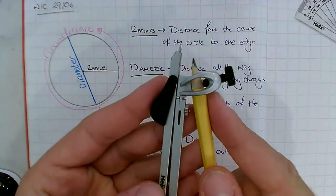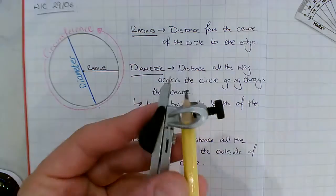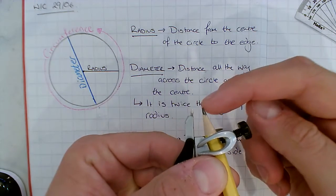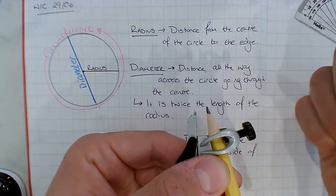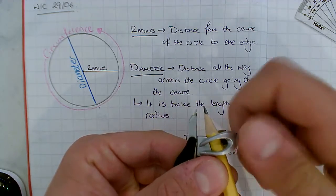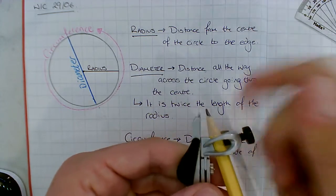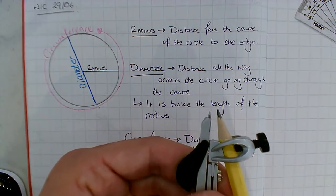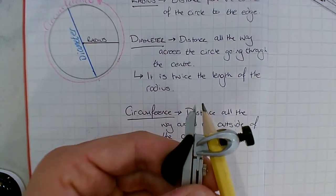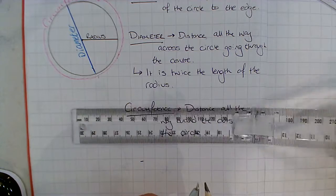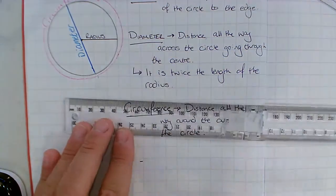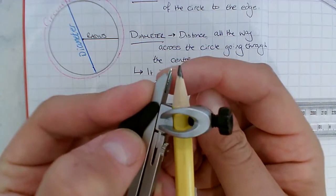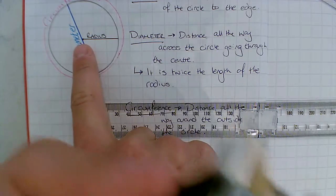Put the arms of the compasses together and loosen that little bit there. Line up the point of your pencil with the point of your compasses. When that is nice and lined up, tighten your compasses nice and tight so the pencil's not going to go anywhere. The point of my pencil is lined up with the point of my compasses. Then we're going to use our ruler — for this one I drew it with a radius of three centimetres. The point of my compasses is the middle or the centre of my circle, and the pencil, wherever that goes to, will give me my radius.